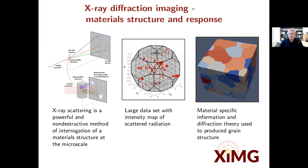This set contains material-specific information that has to be deconvolved, and it includes not only the crystalline structure of the material, but also — because it's really not a single crystal, it's a microstructure — its decomposition into grains, in which each grain is a subset of the material which is also exhibiting a different orientation.